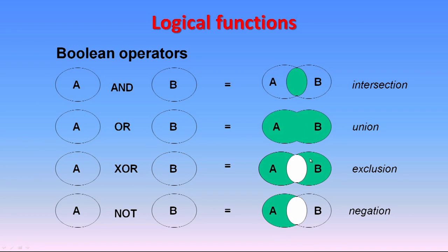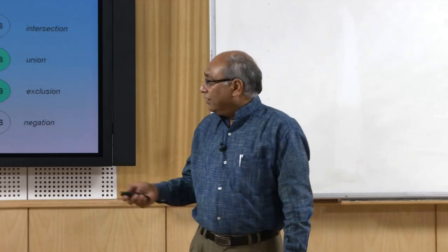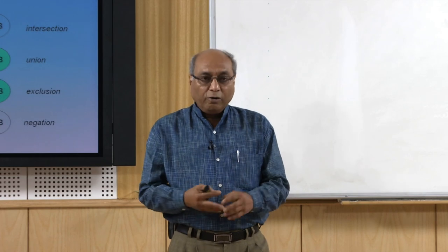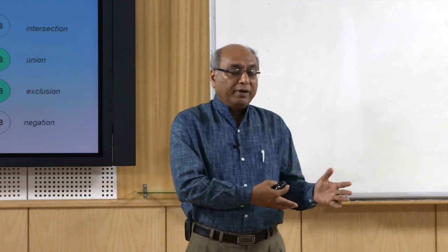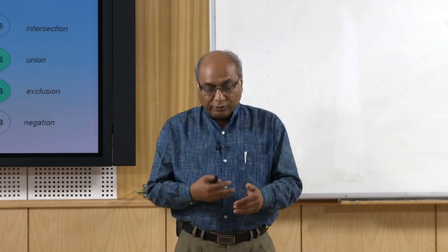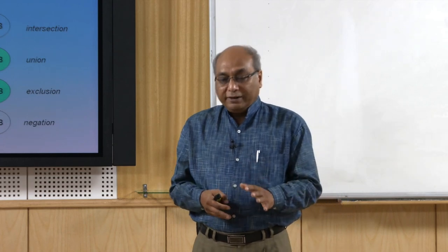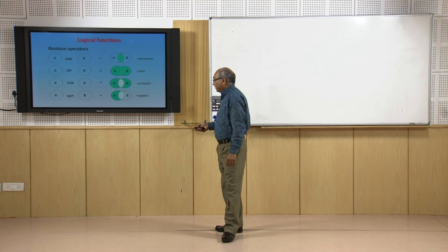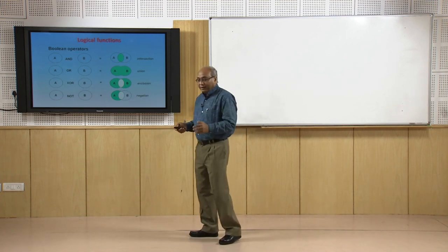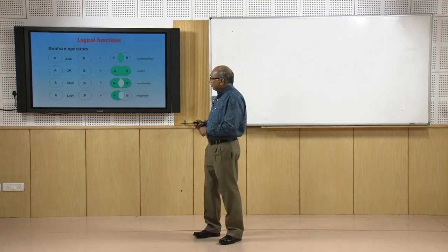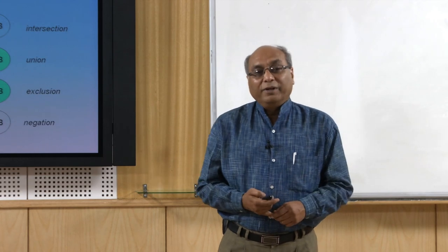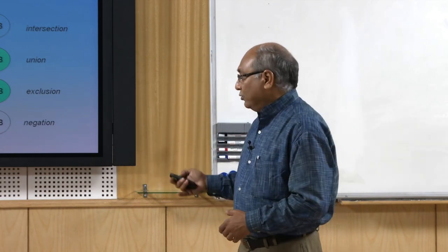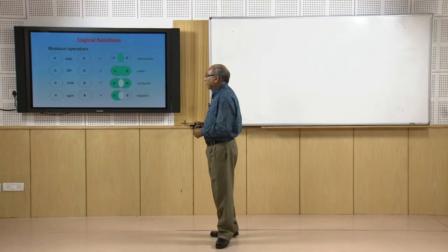These are the logical operators used through software to get different results. The example is very simple where two maps each have one polygon each, but in real operations two maps might have 20 and 30 polygons respectively, making the operation more complicated. However, fundamentally it is based on the same set theory and Boolean operators - the mathematics we learned earlier is now being used in GIS. This is a very powerful tool within GIS.